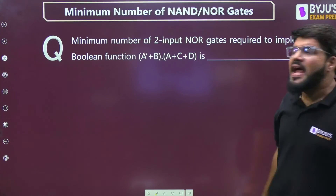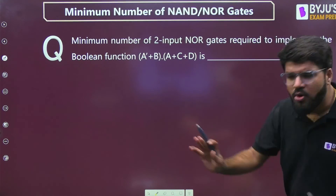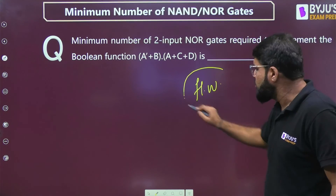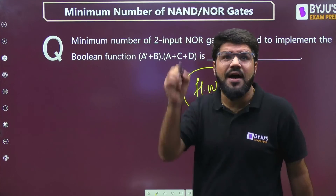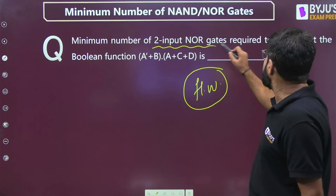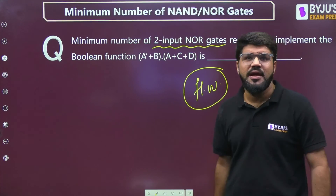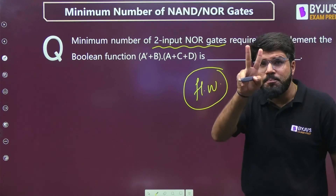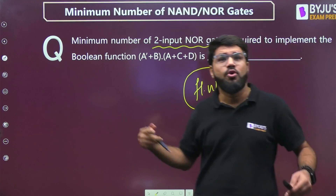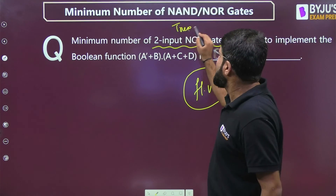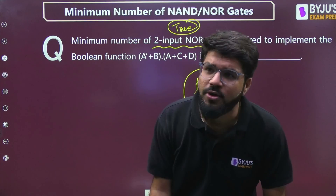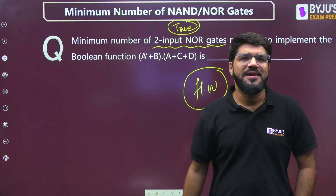If you've understood this trick, hit the like button and subscribe to the channel to stay updated. Here is a homework activity: how many two-input NOR gates are required to implement the Boolean function (A̅+B)·(A+C+...)? First draw the AND-OR circuit, then convert to NOR as explained. Note that inputs are available only in true form — the same condition applies. Hope you liked the trick. Thank you, stay safe, and keep enjoying the Trickopedia series.